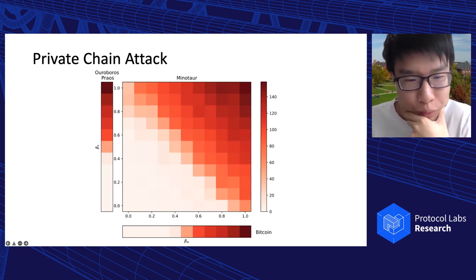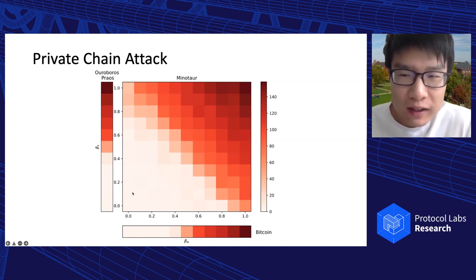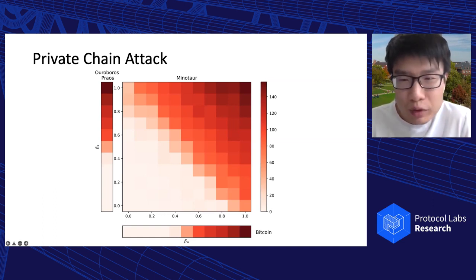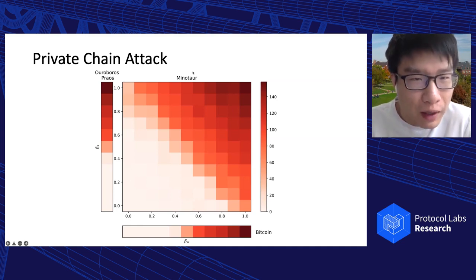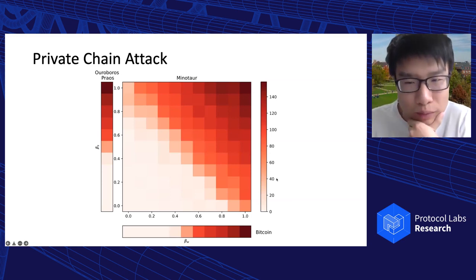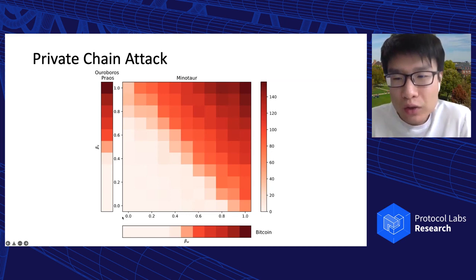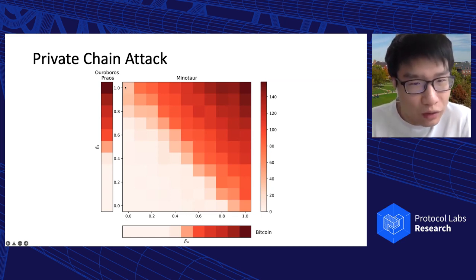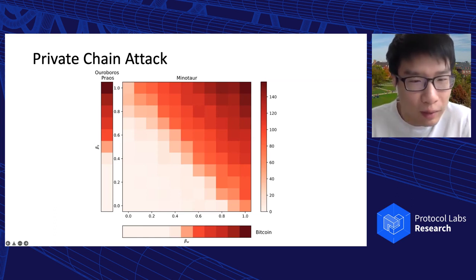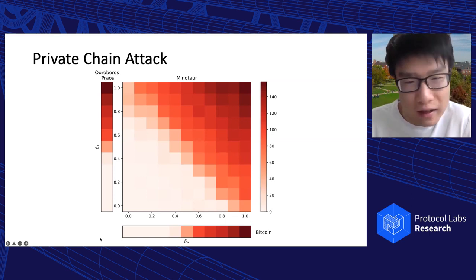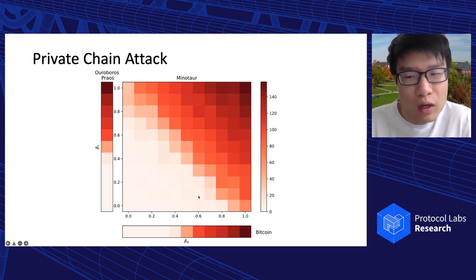The second attack is the private chain attack, where an attacker tries to privately generate an alternate chain faster than the public honest chain to displace a confirmed block. This heat map reports the longest fork the attacker can maintain during the attack in Minotaur, Bitcoin, and Ouroboros-Praos. We observe that as long as β_W + β_S < 1, the attacker can only succeed with a very short private chain, even when either β_S or β_W is close to one. By contrast, Ouroboros-Praos requires β_S < 1/2 and Bitcoin requires β_W < 1/2 respectively. This result is in line with our security proof of Minotaur.